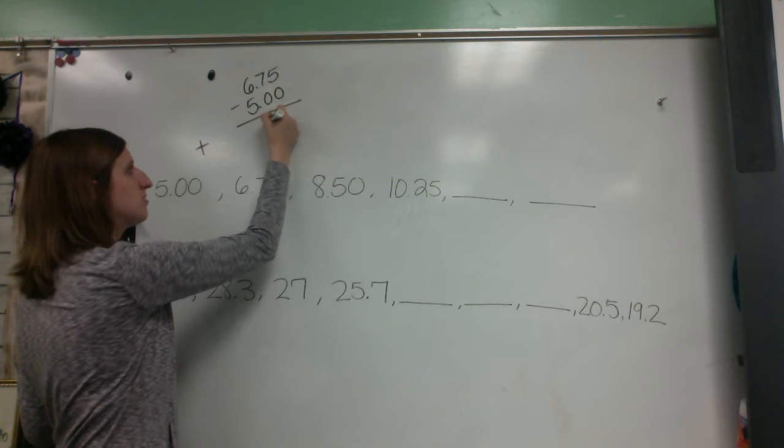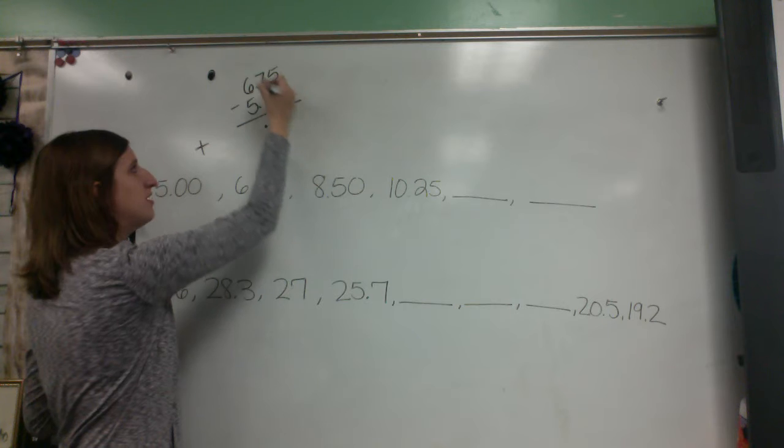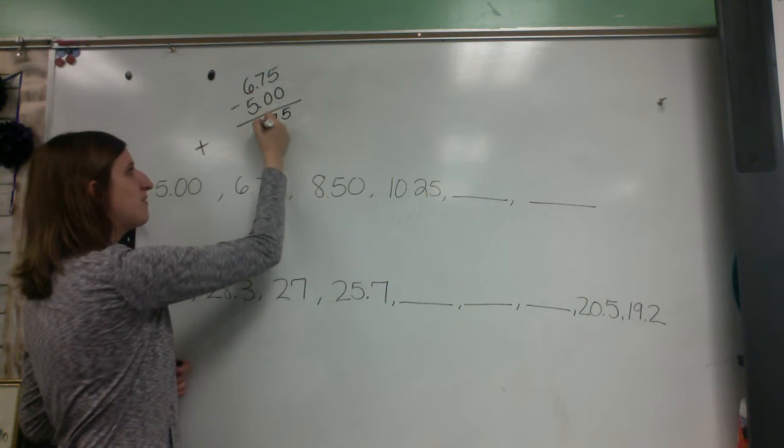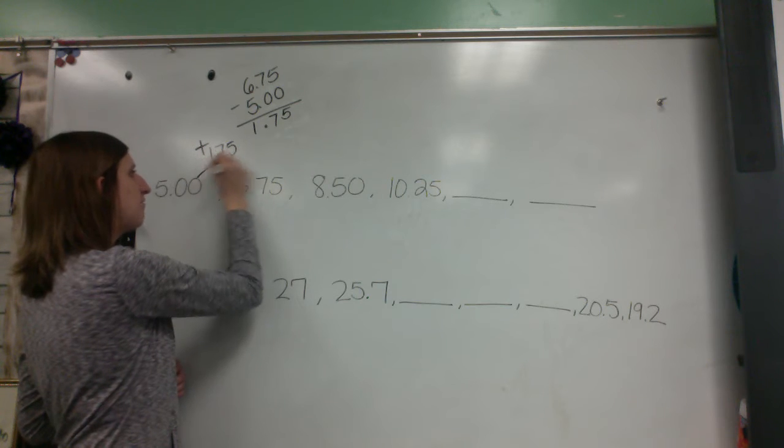So I'm making sure my decimals are lined up, I'm dropping that decimal down to the answer. 5 minus 0 is 5, 7 minus 0 is 7, 6 minus 5 is 1. So I went up 1.75 from here to here.